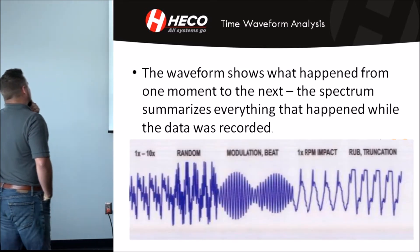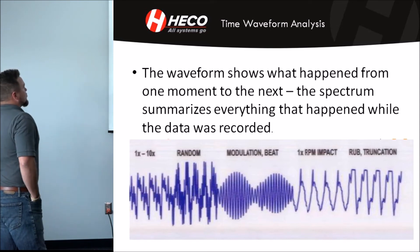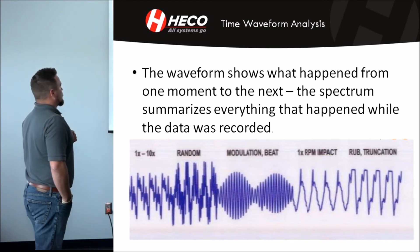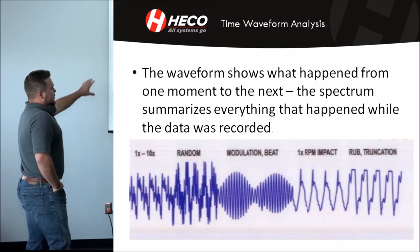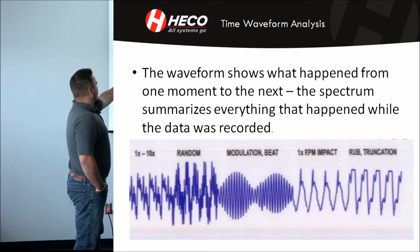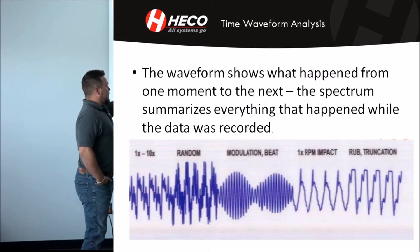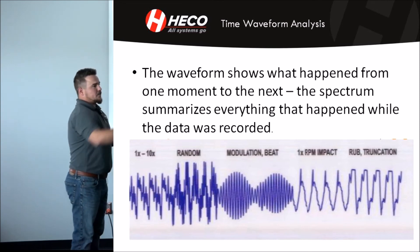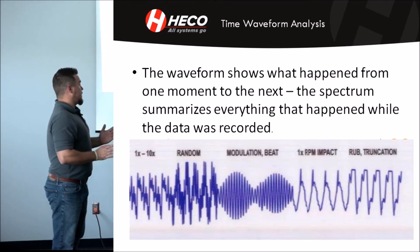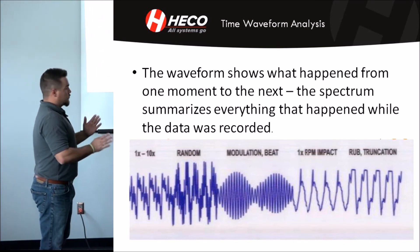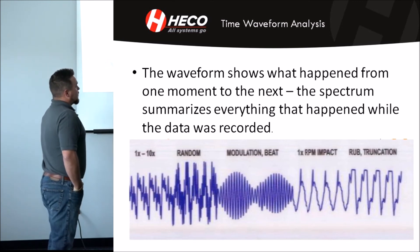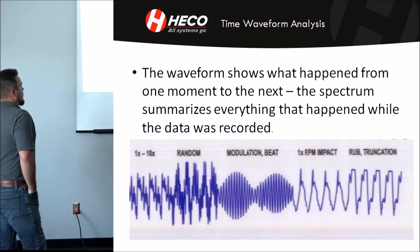Time wave analysis: the waveform shows what happens from one moment to the next, while the spectrum summarizes everything that happened while the data was recorded. Down here are examples of pattern recognition you'd see in the time wave — random noise, modulation, or beat. Beat is basically when two components are really close together in frequency — they go in and out of phase with each other and cause a beat, which you've probably heard walking around plants. And then you've got things like rub and truncation that you can also see in the time wave.